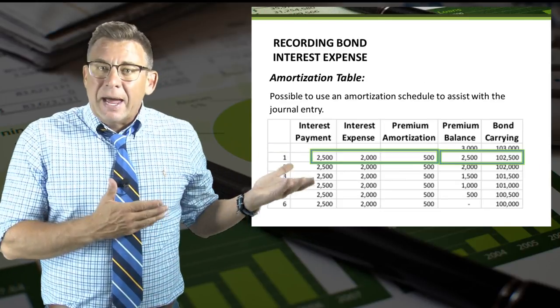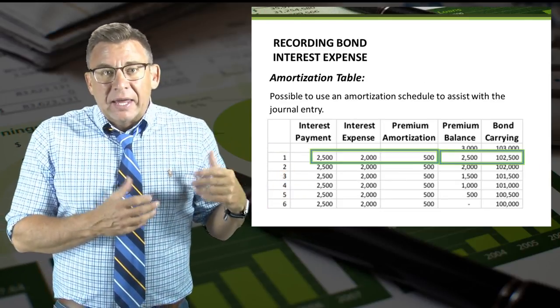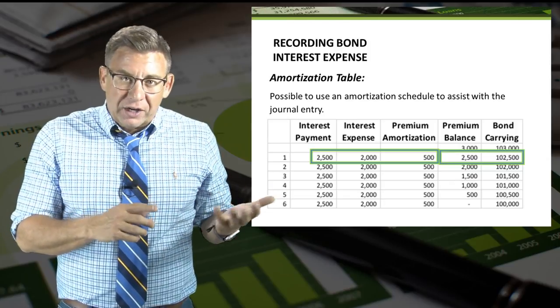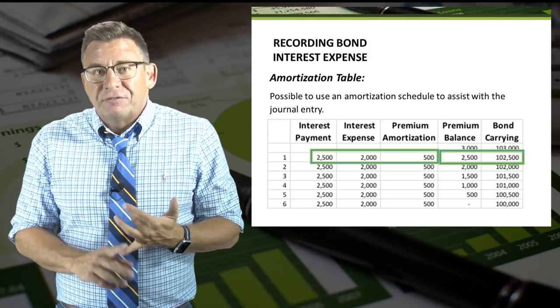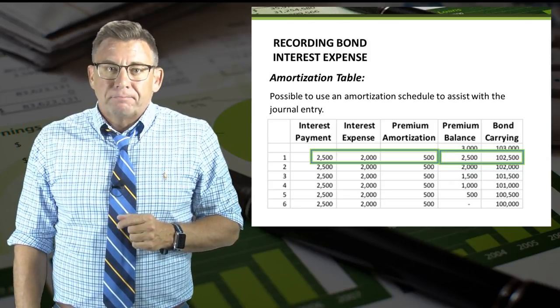Here is the amortization table. Again, we would use this to get data for the journal entry and to verify the balance sheet reporting, which you can see here.